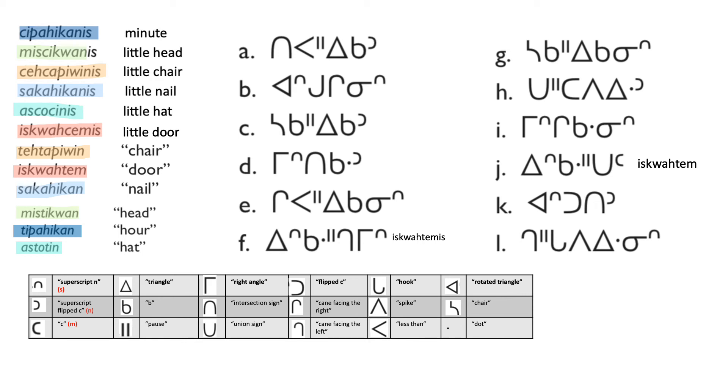Also, we find that b dot represents qua. With that being said, if we look at f again, where we can see the b dot, it's easy for us to note down that the little pause subscript equals to h, and the cane facing the left equals to ce.